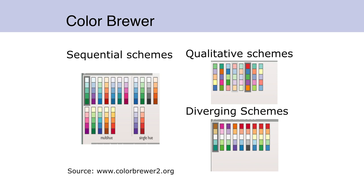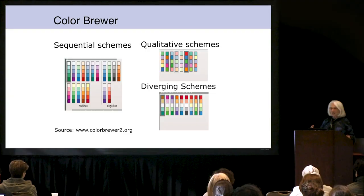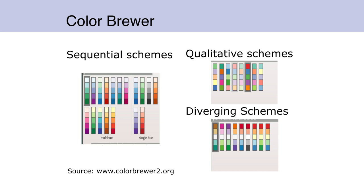Qualitative schemes are different hues with the same saturation and lightness, which is very good for categorical data. If you have three countries, you don't want to make one more important than the other, so different hues of the same saturation is good for qualitative data.